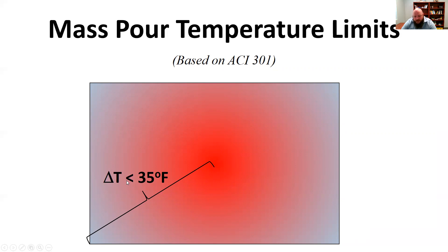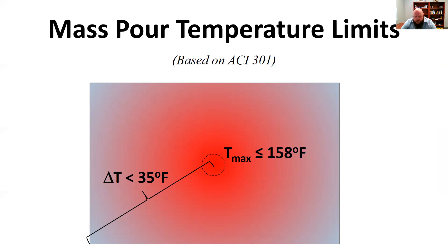Some references say 38 or 40 degrees, but ACI 301 specifies 35 degrees Fahrenheit. Both of those numbers are pretty reasonable. So when we talk about mass pours, we're trying to design concrete so that it doesn't have thermal cracking and doesn't have delayed ettringite formation — both types of cracking are what we're trying to avoid.